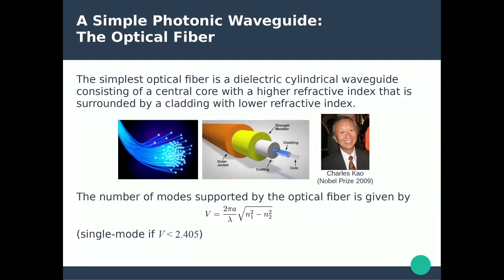The simplest example of a photonic waveguide is the optical fiber, pioneered by Charles Kao in the 1960s. He received the Nobel Prize in 2009 for this work. It's a simple dielectric cylindrical waveguide with a glass core of high refractive index, surrounded by a cladding of lower refractive index. The difference in refractive index between core and cladding produces total internal reflection that confines the light. Additional layers provide coating and mechanical strength.